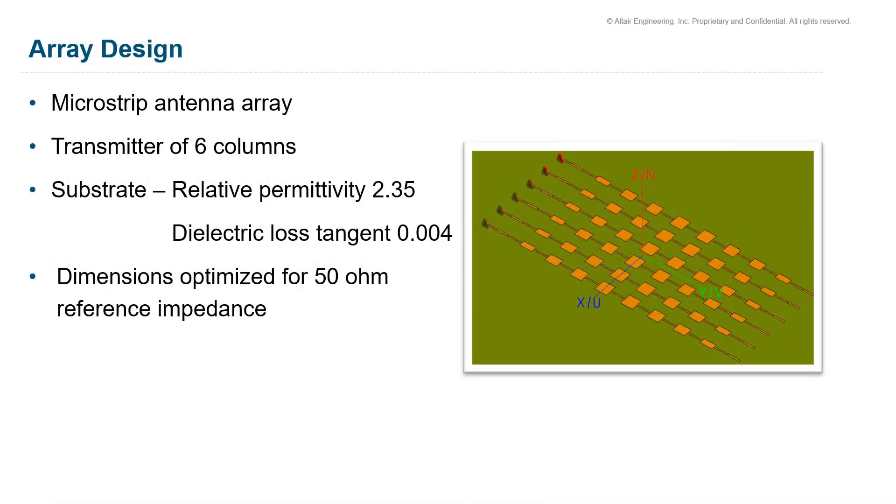The ACC radar application requires a low-cost antenna technology for mass production. The most common antennas used are based on microstrip array topology considered as a low-cost solution. In order to fulfill the constraints, the transmitter antenna is made of six columns of patch arrays. The relative permittivity of the substrate is 2.35 and the dielectric loss tangent is 0.004. The dimensions of the radiating patches in the columns are optimized for a 50-ohm reference impedance.